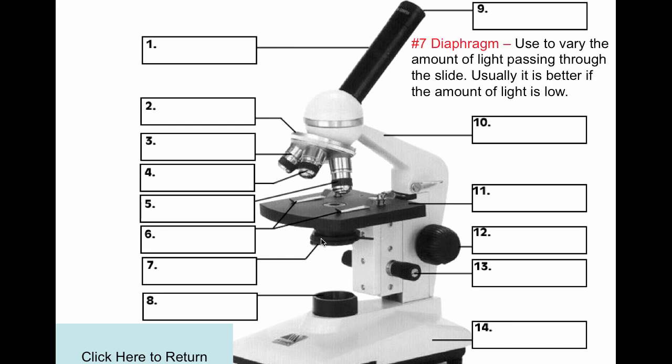Number 7 is called the diaphragm. It's under the stage and is made of plastic. It has several holes in it. It allows you to vary the amount of light passing through the slide. It's usually better if there's a low amount of light passing through.